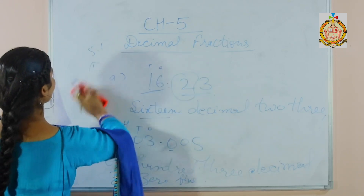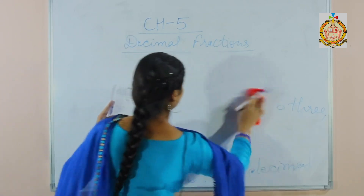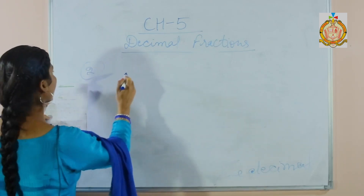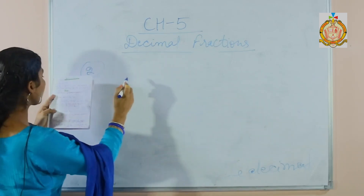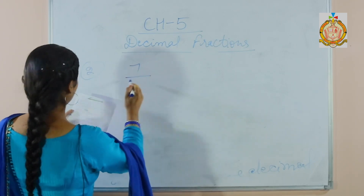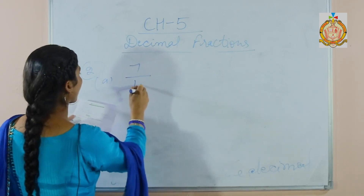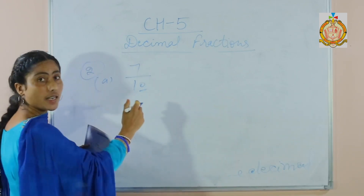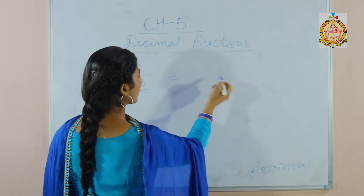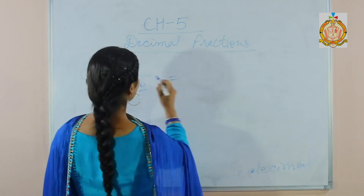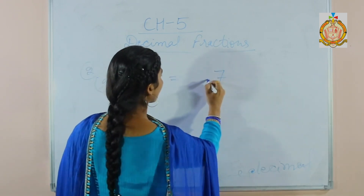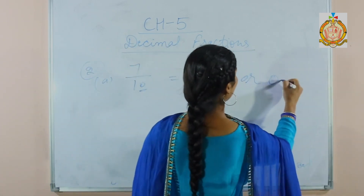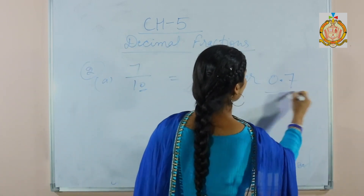Second question: write each fraction as a decimal. The fraction is 7 over 10. Students, see the denominator — there is 10, it has one zero. So that's why there will be 1 decimal place after the decimal. It will be 0.7 — you can write decimal 7 or 0.7.